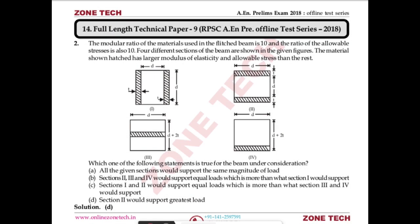Question number two: the modular ratio of the material used in the flitch beam is 10, and the ratio of allowable stresses is also 10. The material shown with hatching has a larger modulus of elasticity and allowable stress than the rest of the composite beam.